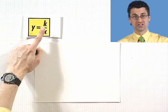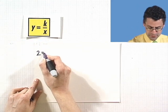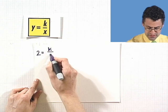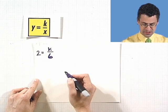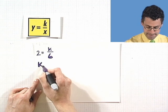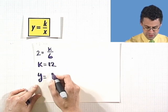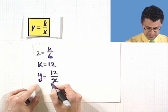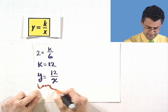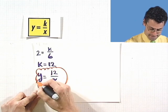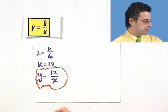Remember, k is not a variable — it's just an unknown constant. So I see that y equals 2 when x equals 6. I can multiply both sides by 6, and I see that k equals 12. Therefore, y equals 12 over x. That is the inverse variation equation in this case. Great, that was pretty easy — and now we want to graph it.